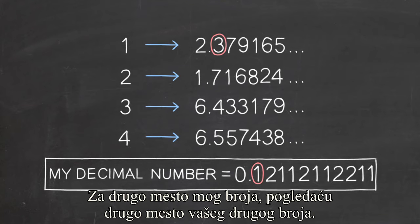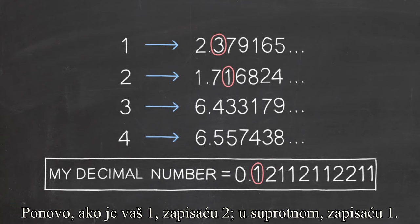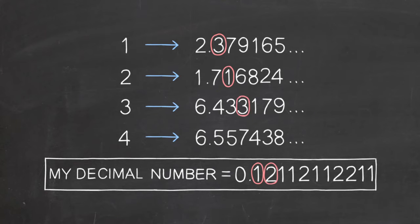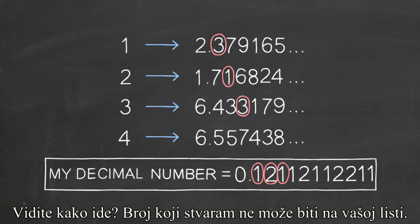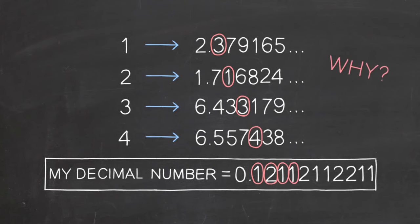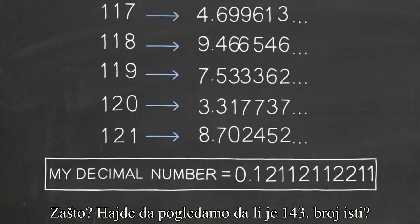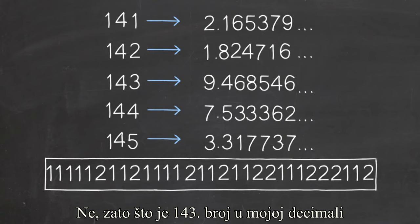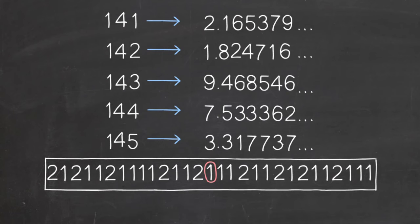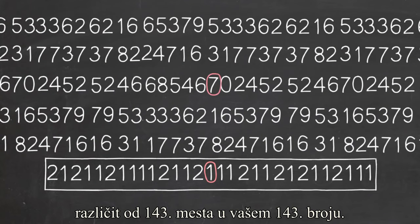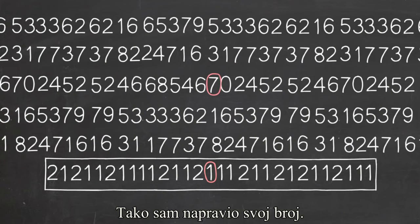For the second place of my number, I'll look at the second place of your second number. Again, if yours is a 1, I'll make mine a 2. And otherwise, I'll make mine a 1. See how this is going? The decimal I produce can't be on your list. Why? Could it be, say, your 143rd number? No, because the 143rd place of my decimal is different from the 143rd place of your 143rd number. I made it that way.